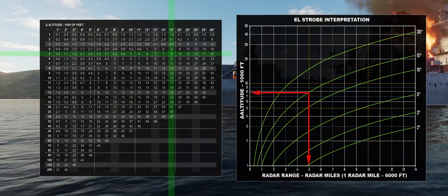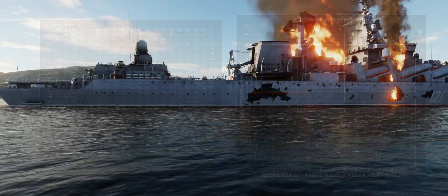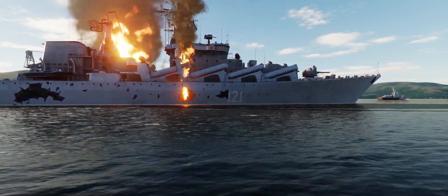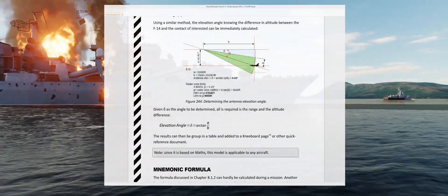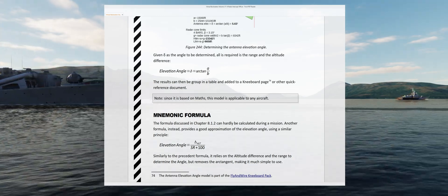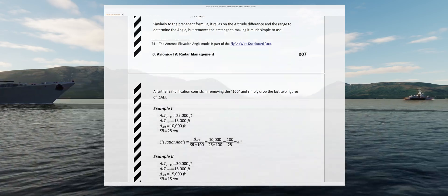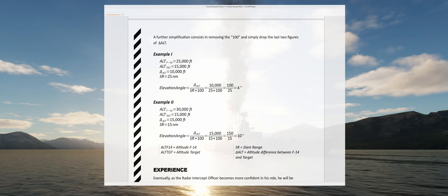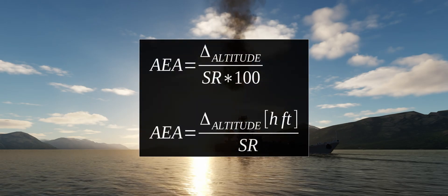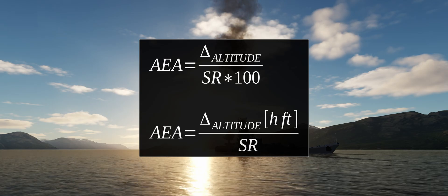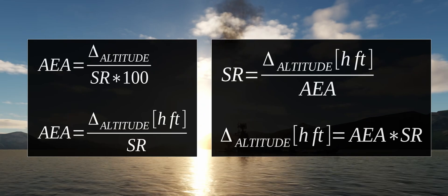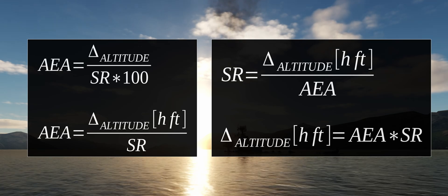Eventually, I will add both this chart and my table to the F-4E kneeboard pack I am putting together. A similar pack has been available for a very long time for the Tomcat and you can download it from flyandwire.com. The general mnemonic formula to approximate the antenna elevation angle is: delta altitude divided by SR times 100. The 100 can be elided by using hundreds of feet in the altitude, giving: delta altitude in hundreds of feet divided by the slant range. Range equals delta altitude in hundreds of feet divided by antenna elevation; delta altitude in hundreds of feet equals range times antenna elevation.